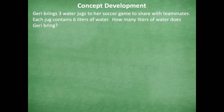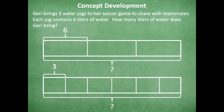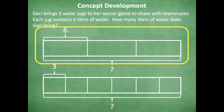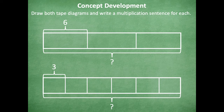Let's keep the same problem and talk about it with our concept development. Here are two examples of a tape diagram — which tape diagram best describes how many liters of water Jerry brought to share with her teammates? The top tape diagram or the bottom tape diagram? It's the top tape diagram, because they're talking about bringing three jugs of water and each jug contains six liters. Draw both tape diagrams, or at least write a multiplication sentence for each one.